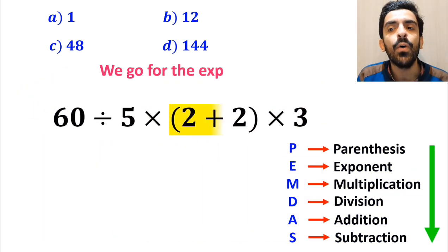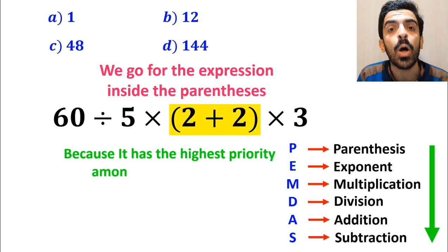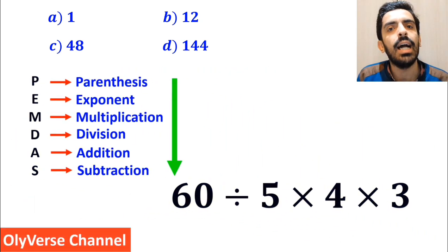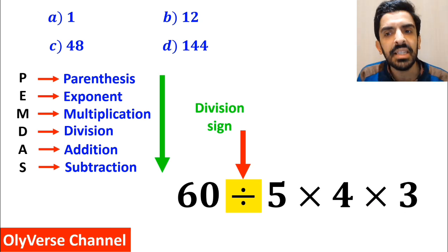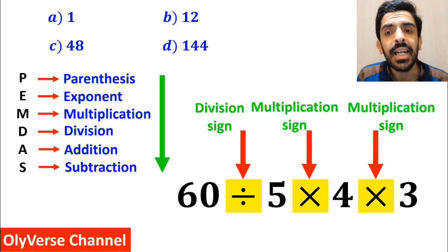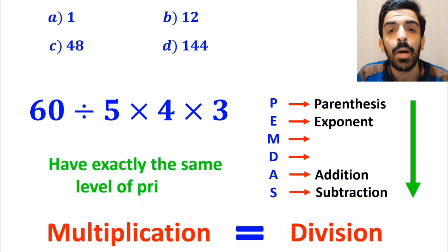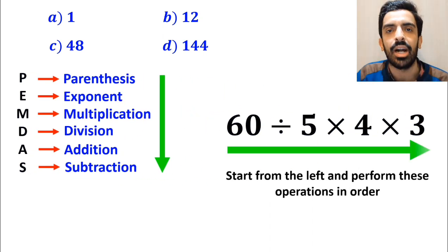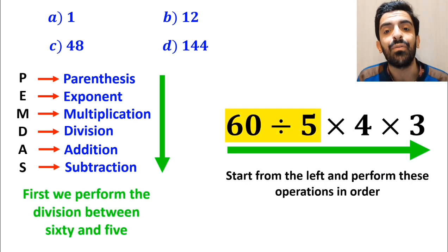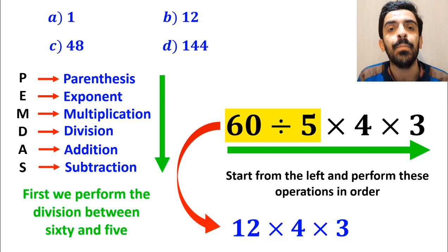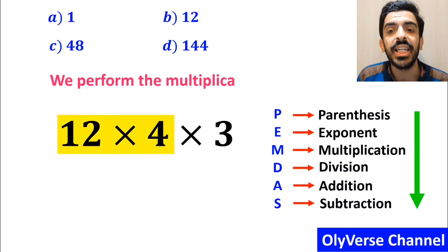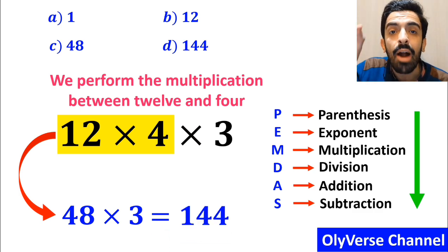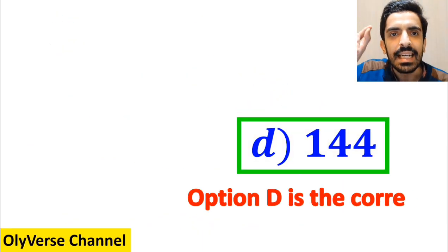We have to follow the order of operations from top to bottom. In the first step, we go for the expression inside the parenthesis, because it has the highest priority among all the operations. So instead of this expression, we get 60 divided by 5 times 4 multiplied by 3. As you can see in the image, we have one division sign followed by two multiplication signs. We must pay close attention that multiplication and division have exactly the same level of priority in the PEMDAS rule. In this situation, the best thing to do is to start from the left and perform these operations in order. So first we perform the division between 60 and 5, which simplifies this expression to 12 multiplied by 4 and again multiplied by 3. In the next step, we perform the multiplication between 12 and 4, and instead of this expression we can write 48 times 3, which finally gives us the answer 144. Therefore, option D is the correct answer to this question.